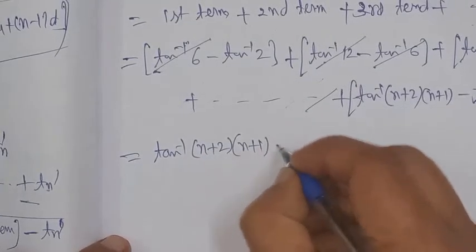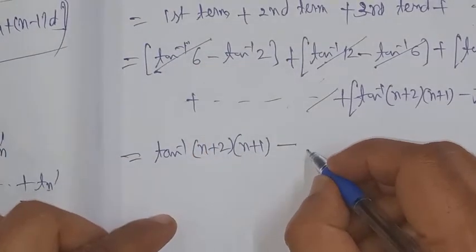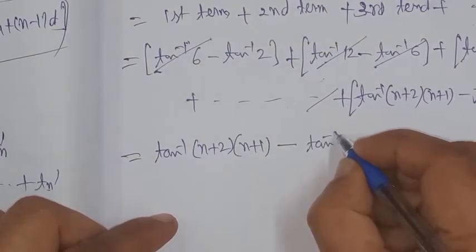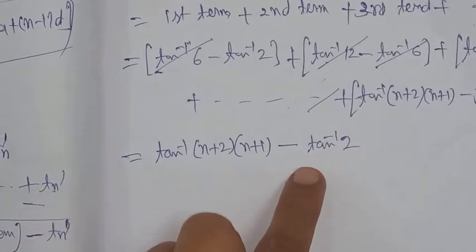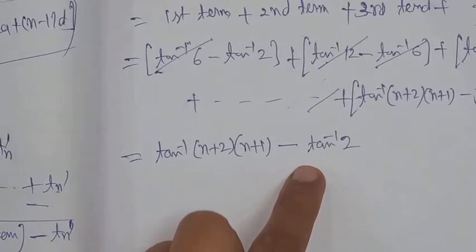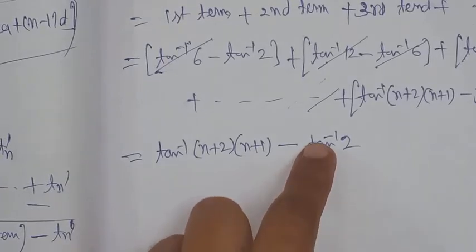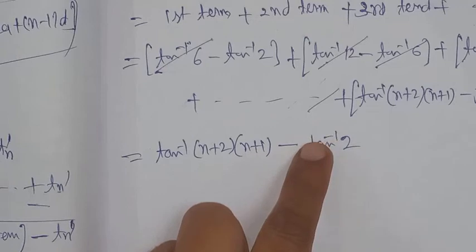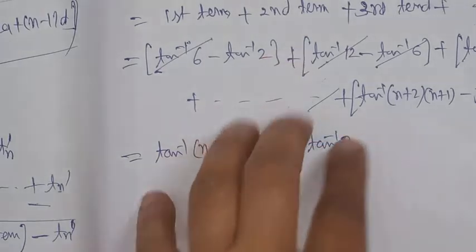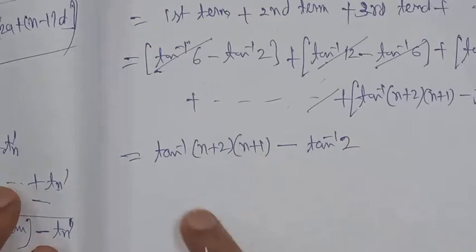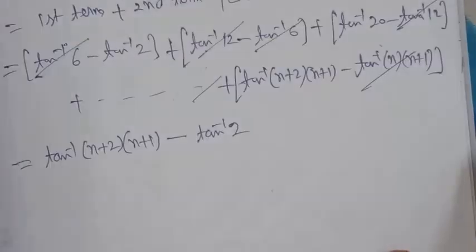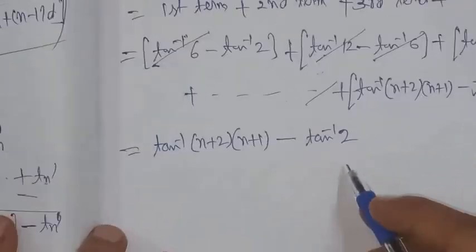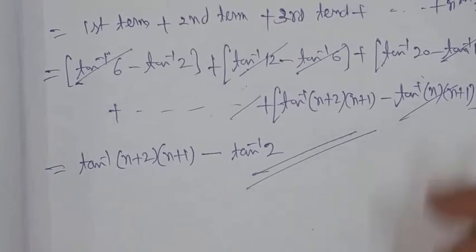After all cancellations, the final answer is tan⁻¹((n+1)(n+2)) - tan⁻¹2. This completes the solution. Thank you very much for listening.